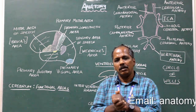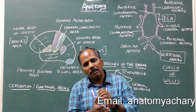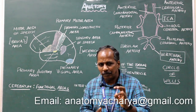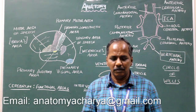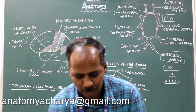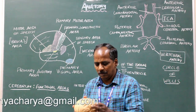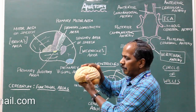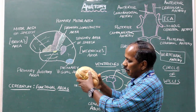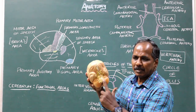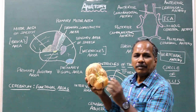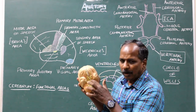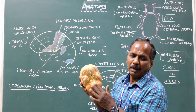The parts of the brain are cerebrum, cerebellum, and the brain stem. The brain stem includes midbrain, pons, and medulla oblongata.